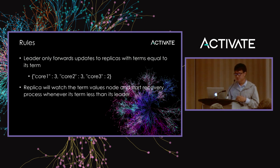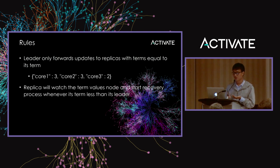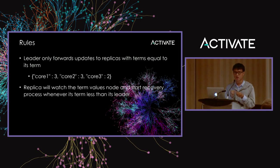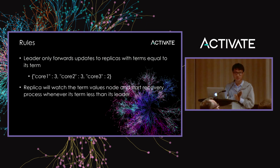There are two rules the leader and replica must obey. First, the leader only forwards updates to replicas whose term equals its own term — so core1 will forward to core2 but skip core3. Second, each replica watches the term value ZooKeeper node, and whenever that node changes it gets notified. If a replica finds its term is now less than the leader's, it must start the recovery process. So core3, watching the shard term node, will know its term is less than the leader's term of 3 and must start recovery.